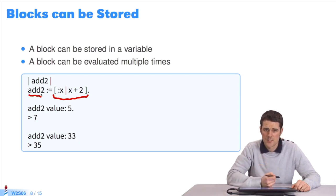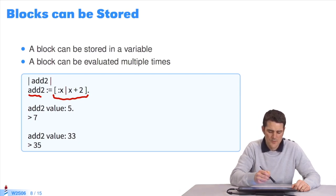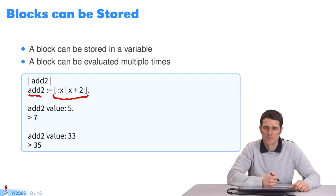Then you send messages to evaluate the block several times. I send the message value once by telling it to evaluate itself with the value 5. It returns 7. Then the message value 33. It returns 35.